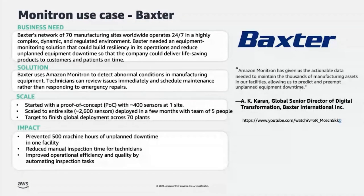They started their journey with Monitron at one site — a cooling tower that provided chilled water for two production areas to maintain room temperature. They started with around 400 sensors installed at this site. They ran the POC for a couple of months, but within the first month they started to see value. Monitron detected an anomaly on a gearbox that was close to failure, which helped Baxter save approximately 396 hours of machine downtime. Over time, they have scaled to the entire site with around 2,600 sensors, deployed in a few months with a team of five people. They are scaling to other global manufacturing sites with a target to finish global deployments across 70 plants.